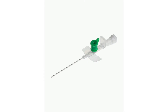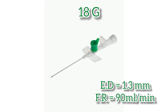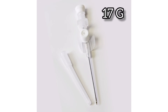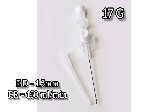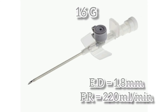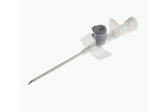The green colored cannula is gauge 18 with an external diameter of 1.3 mm and flow rate of 90 ml per minute. The white colored cannula is gauge 17 with an external diameter of 1.5 mm and flow rate of 150 ml per minute. The gray colored cannula is gauge 16 with an external diameter of 1.8 mm and flow rate of 220 ml per minute.